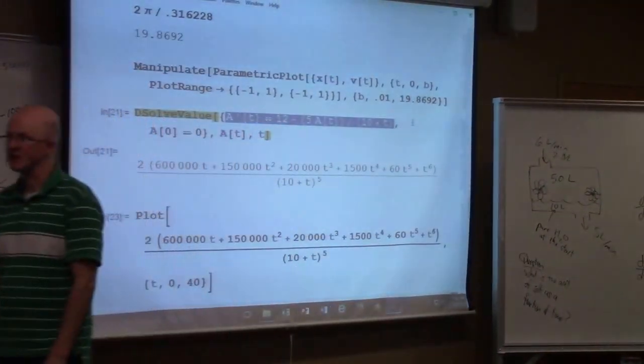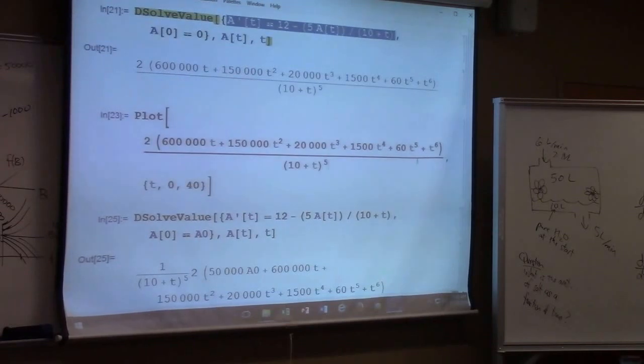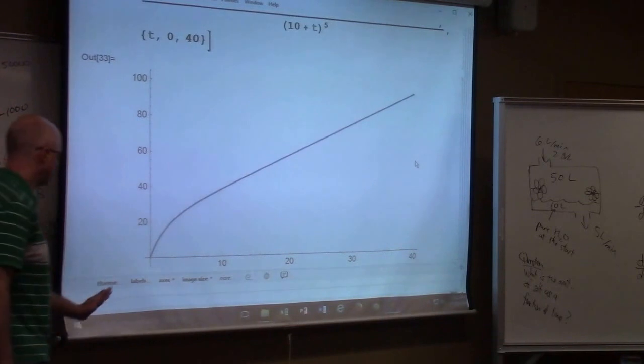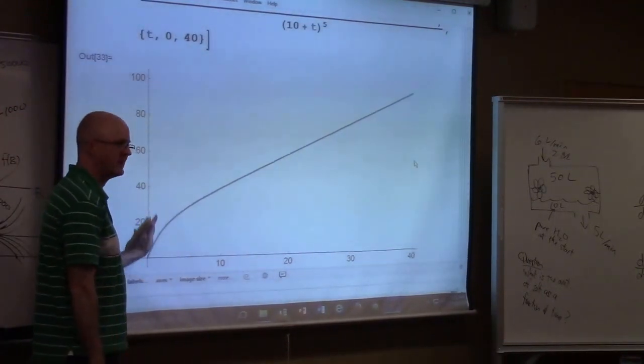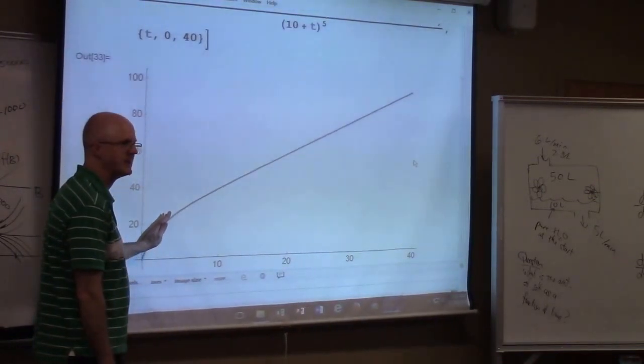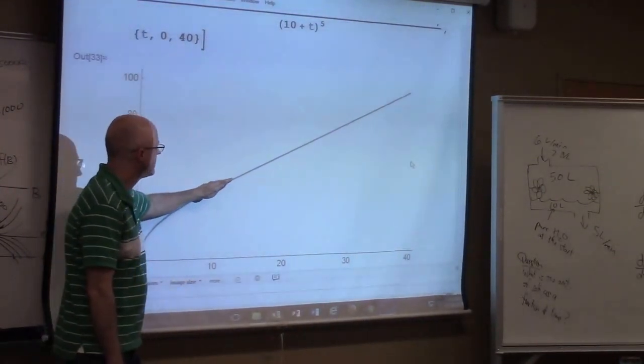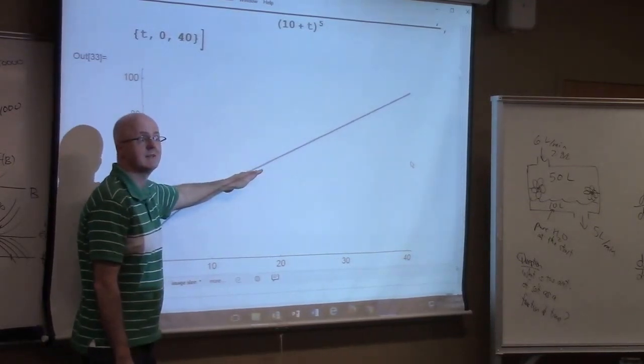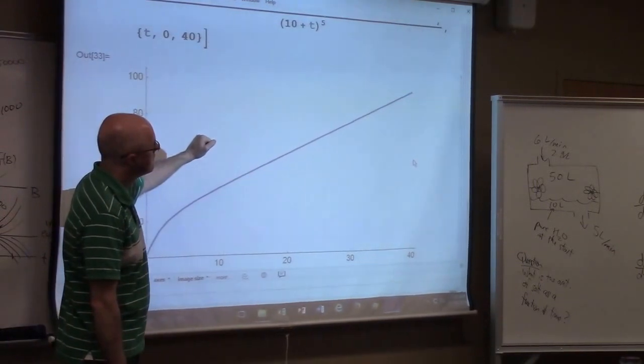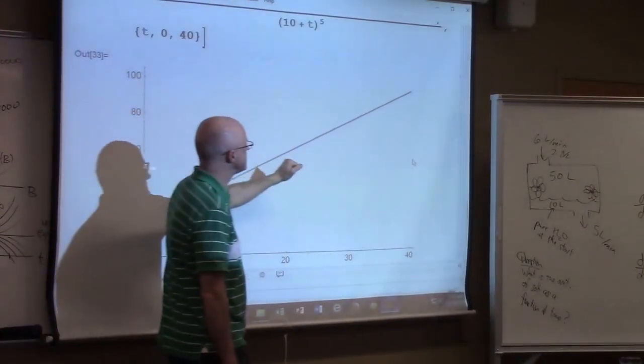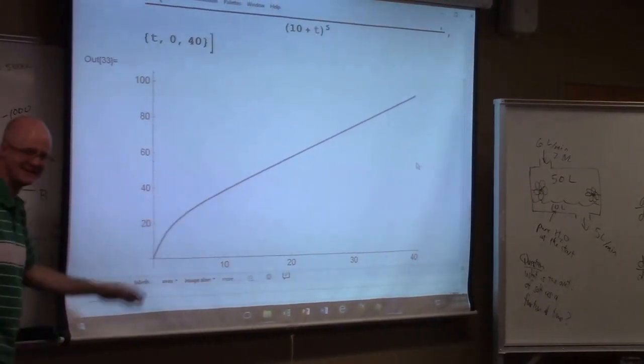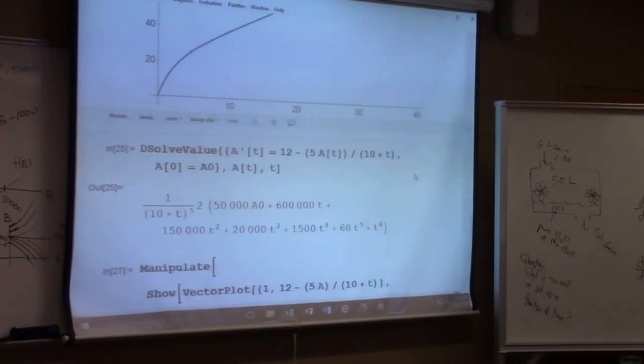The initial amount of salt is 0. We got this function. Pretty amazing that it's such a long polynomial on top. You can certainly plot that function to see how the amount of salt changes as a function of time. The interesting thing is it's not only increasing, but it's concave down. So the amount of salt initially goes up very rapidly, and then it kind of heads toward almost a straight line going up.